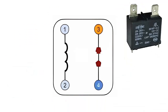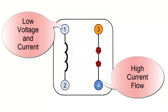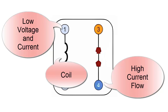A relay is an electromechanical device that, through a low voltage and current signal, energizes a coil. This coil, generating a magnetic field, activates a switch that, upon closing, allows the passage of higher voltage and current to start the desired equipment.